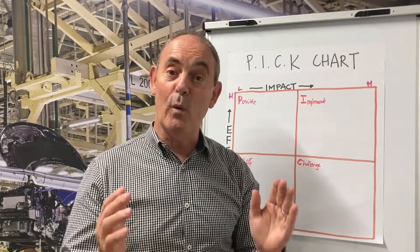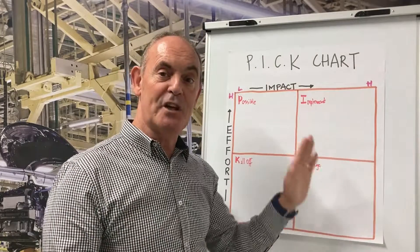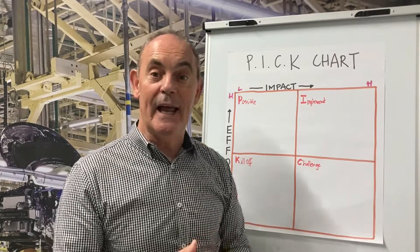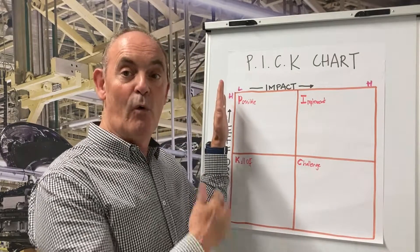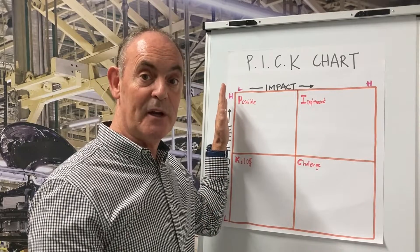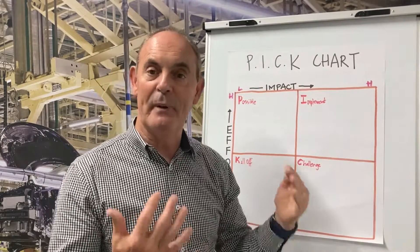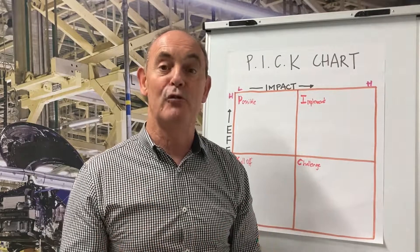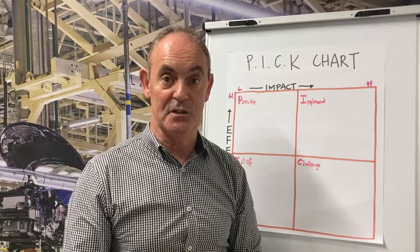A PICK Chart is simply a four-quadrant diagram — Possible, Implement, Challenge, and Kill-off — in an effort and impact matrix. The amount of effort, or the work or capital required to implement the idea, as opposed to the impact, the amount of benefit that it's going to bring. A very simple but powerful tool that can be used in a whole lot of different applications.